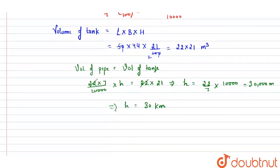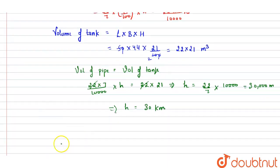Now we can apply unitary method here. 15 kilometer travels in pipe in 1 by 15 hour, and 30 kilometers travel in pipe.